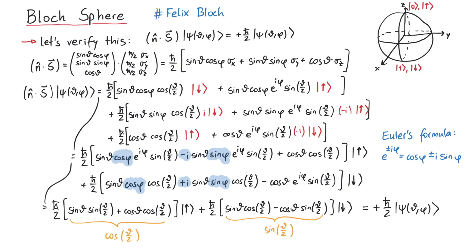So, to recap, for any point on the sphere with theta and phi, the corresponding Bloch state is an eigenfunction to the spin operator in that same direction with positive eigenvalue plus h-bar over 2. To get the negative eigenvalue, we have to go to the opposite side of the sphere.